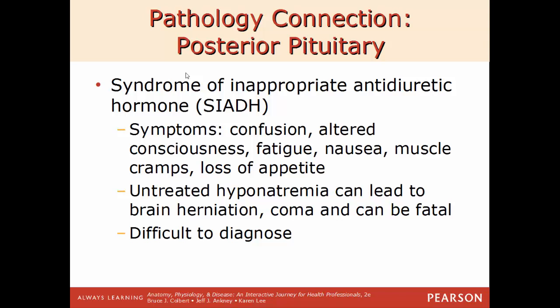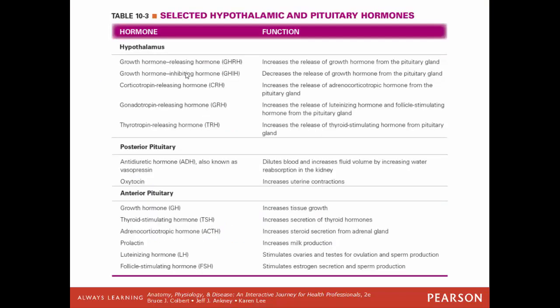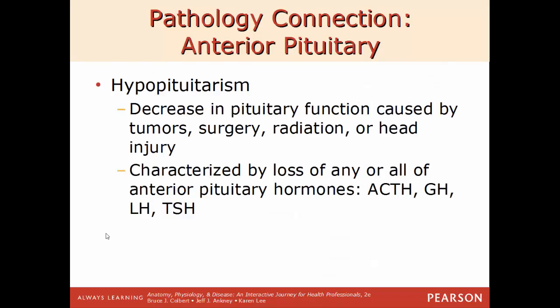Here is a selected table of hypothalamic and pituitary hormones — what structure they come from (hypothalamus, posterior lobe of pituitary, or anterior lobe of pituitary) and their function. This provides a short reference list of all the hormones produced by these structures.